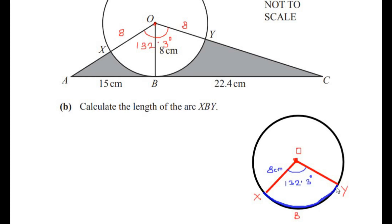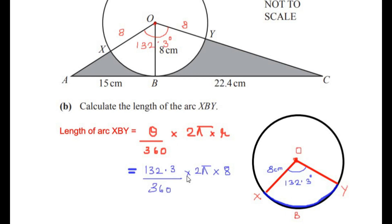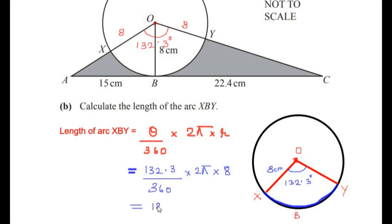The arc length formula is given as (θ / 360) × 2πr, where θ is the central angle of the sector and r is the radius. Substituting the values: (132.3 / 360) × 2π × 8, which gives us 147π/25, or in decimal 18.47, which rounds to 18.5 centimeters. So the length of arc XBY is 18.5 centimeters.